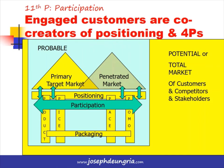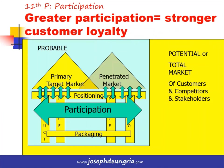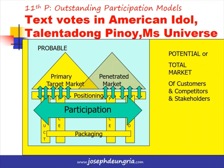The 11th P of Participation has become a very strong key to strengthening positioning. Participation happens when customers are engaged and become co-creators of the positioning and the 4Ps. The greater the customer participation, the stronger the customer loyalty. We see this in text votes in contests like American Idol, Talentadong Pinoy, and Miss Universe — text votes from customers have a real impact on winner selection. It is also seen in shows like Eat Bulaga, where a large portion of the show comes from contestants and audience members.